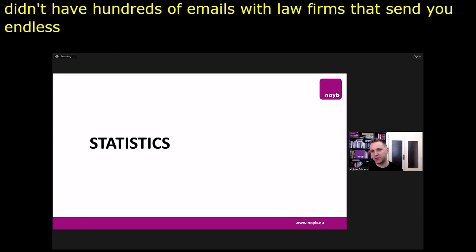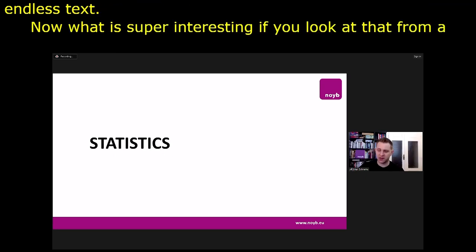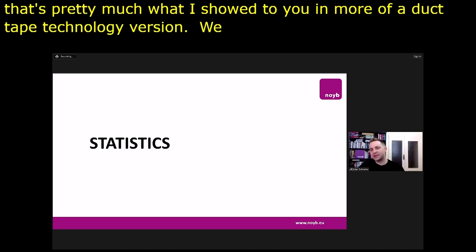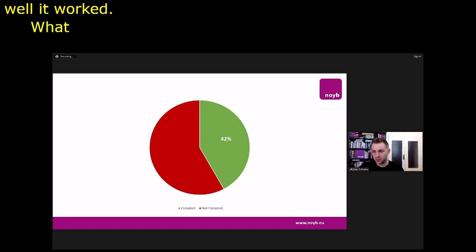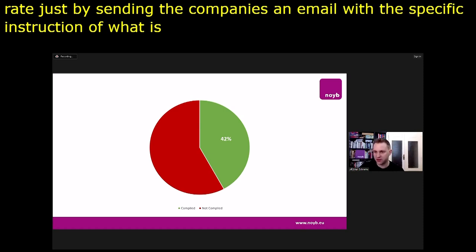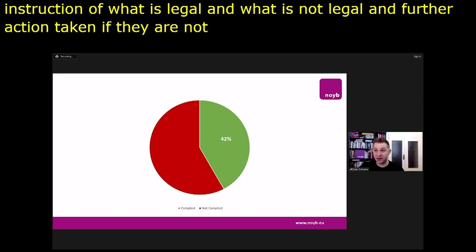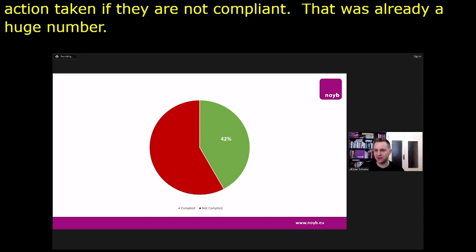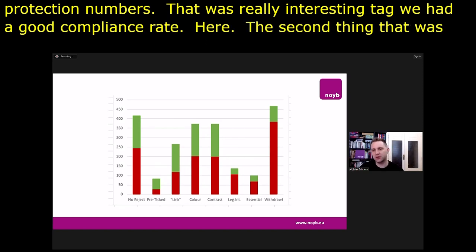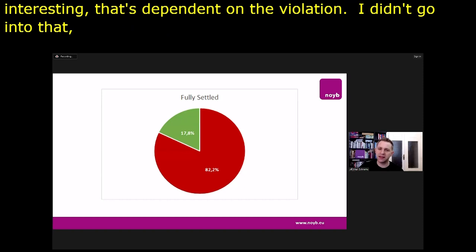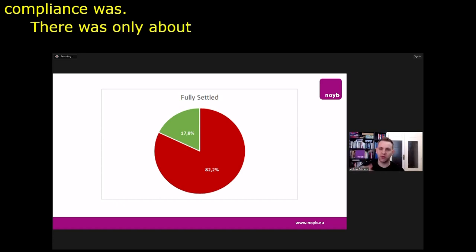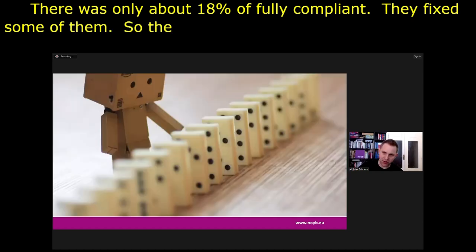Companies that decided to comply could log in to a platform with their case number and let us know they'd fixed the problem. We could then automatically scan and verify that. From a lawyer's perspective, we received feedback from companies in an automated format rather than hundreds of emails with endless text. What was interesting from a statistical point of view: we had a 42% compliance rate just by sending companies an email with specific instructions on what's legal and what's not, with notice that further action would be taken. That's better than what we get from data protection authorities.